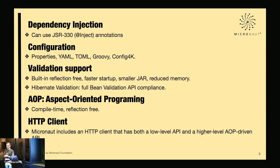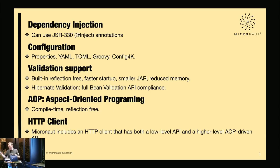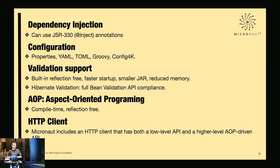Micronaut is quite agnostic and often has multiple implementations of the same thing. For validation you can use Hibernate Validator — fully compliant with the Bean Validation specification — or Micronaut's own reflection-free validation, a subset of the spec. Developers use the standard jakarta.validation.constraints annotations they already know: @NotBlank, @NotNull, @Pattern. Micronaut also supports AOP: @Transactional, @Cacheable, and more.